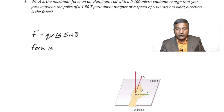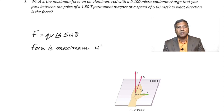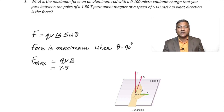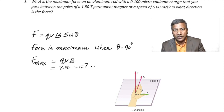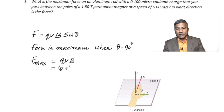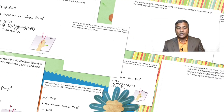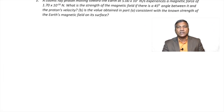The force is calculated using the formula F = QVB sin θ, where θ is the angle between the velocity and the magnetic field. The force becomes maximum when θ = 90°, since sin 90° = 1. Therefore, the maximum force is QVB = 0.1 × 10⁻⁶ × 5 × 1.50, giving 7.50 × 10⁻⁷ newtons.